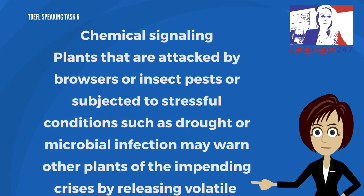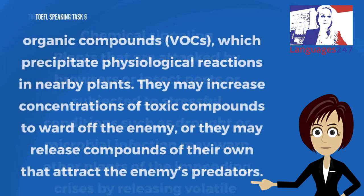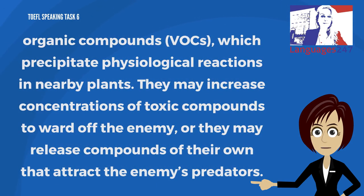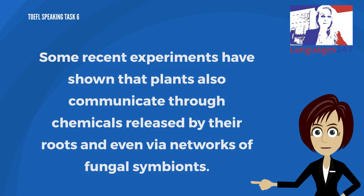Chemical signaling. Plants that are attacked by browsers or insect pests, or subjected to stressful conditions such as drought or microbial infection, may warn other plants of the impending crisis by releasing volatile organic compounds — VOCs — which precipitate physiological reactions in nearby plants. They may increase concentrations of toxic compounds to ward off the enemy, or release compounds that attract the enemy's predators. Some recent experiments have shown that plants also communicate through chemicals released by their roots and even via networks of fungal symbionts.